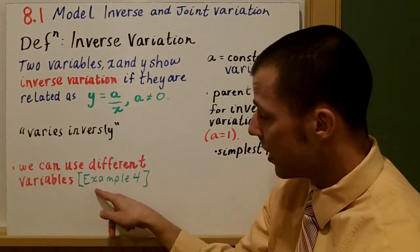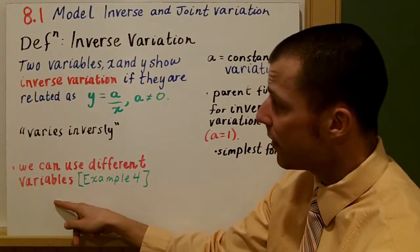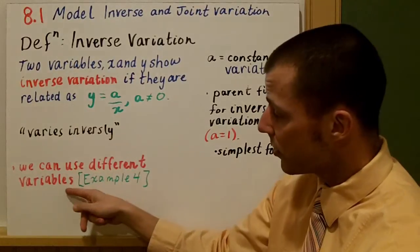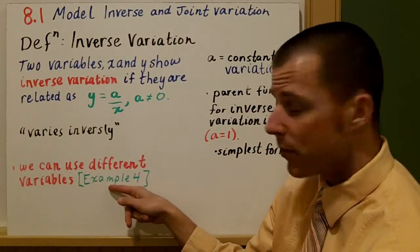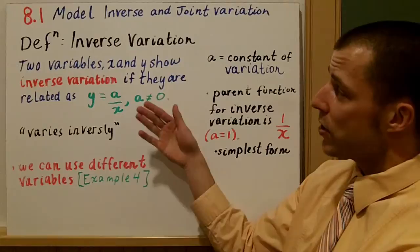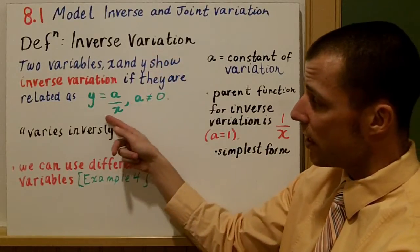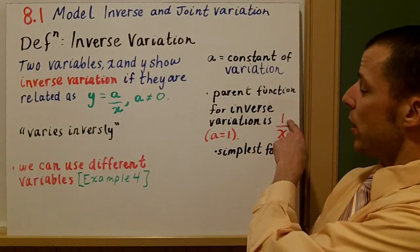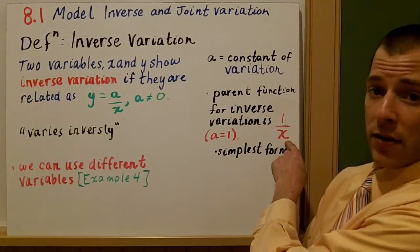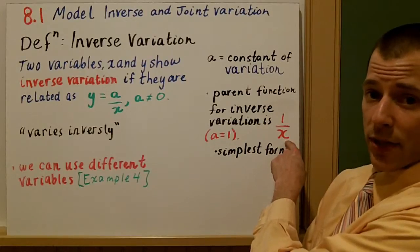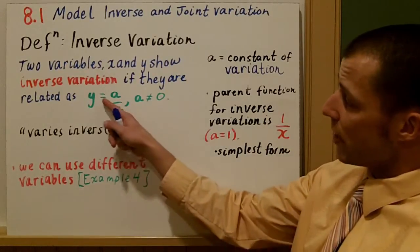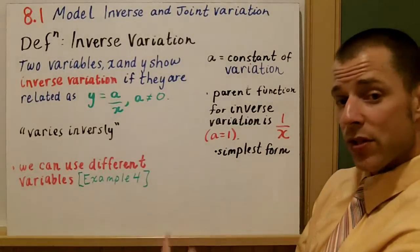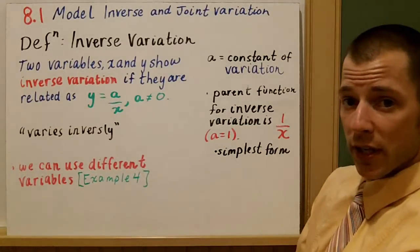It's important to know, especially in example four, that we can use different variables to demonstrate these functions. It doesn't always have to be y and x. As far as how inverse variation relates to a rational function: if a is equal to one, we have the parent rational function of one over x. That's the simplest rational function, and that's what we're going to be studying in this chapter.